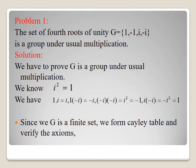Problem 3: The set of all fourth roots of unity, G = {1, −1, i, −i}, is a group under usual multiplication. Solution: We have to prove that G is a group under usual multiplication. We know that i² = −1, and 1·i = i. We calculate: 1·i = i, 1·(−i) = −i, (−i)·(−i) = i² = −1, and i·(−i) = −i² = 1. Since G is a finite set, we form a Cayley table and verify the axioms.